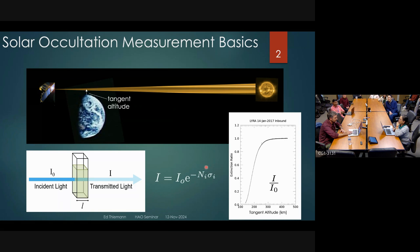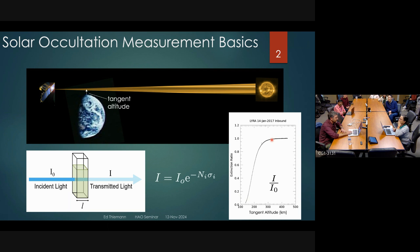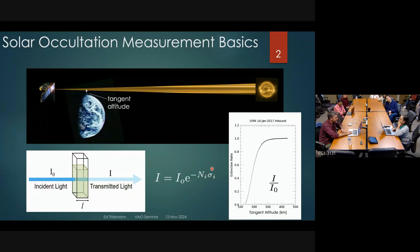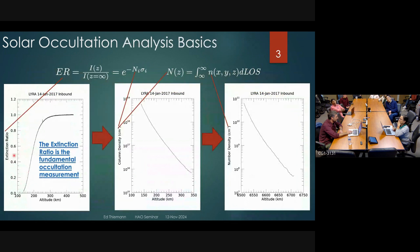This is real data from the LYRA instrument showing absorption of 10-to-20 nanometer light in our thermosphere, spanning from about 150 to 300 kilometers. Notably, the extinction ratio is unitless—it varies from zero to one—so the occultation measurement is essentially self-calibrating; it doesn't depend on any absolute calibration of the instrument. You just need to ensure measurement linearity over this dynamic range.